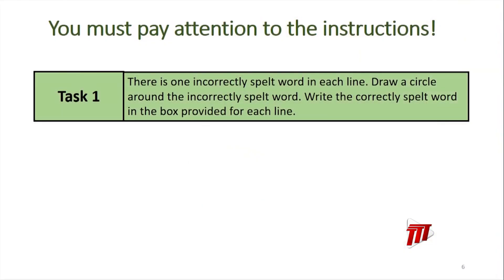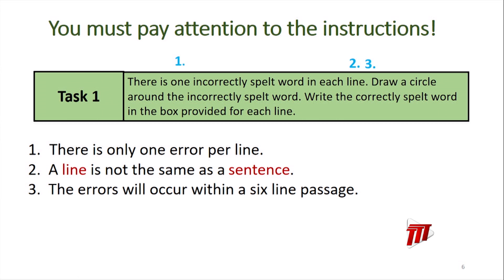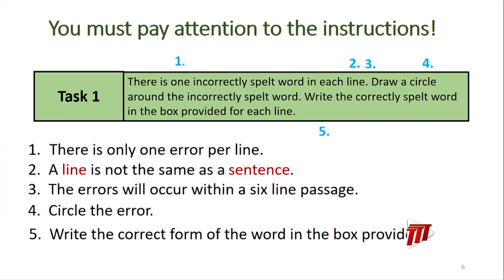We're going to get into Task 1, which is your spelling task. Before I do an exam, I always like to read my instructions. There is one incorrectly spelt word in each line — just one error. A line is not the same as a sentence. You must draw a circle around the incorrectly spelt word — the errors come within a six-line passage. And finally, you need to write the correct form of the word in the box provided. Always pay attention to your instructions.